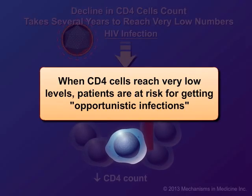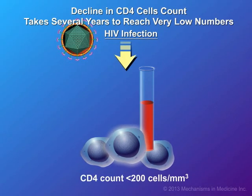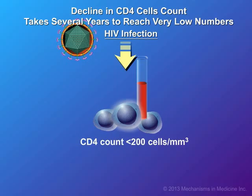These are called opportunistic infections because they take advantage of the body's weakened defenses. Once CD4 cells fall below a level of 200 cells per cubic millimeter in the bloodstream, or if a person has an opportunistic illness, this is considered an advanced stage of HIV infection called Acquired Immune Deficiency Syndrome, or AIDS.